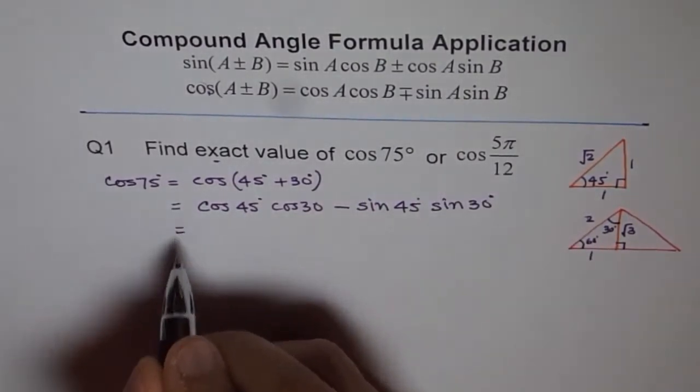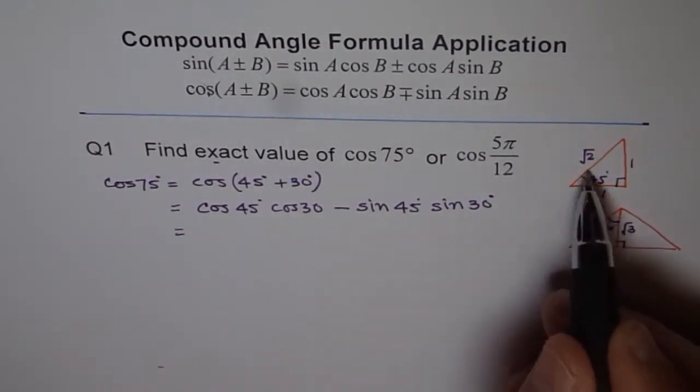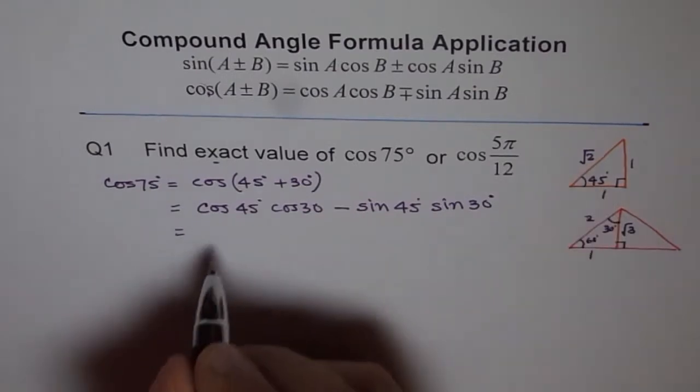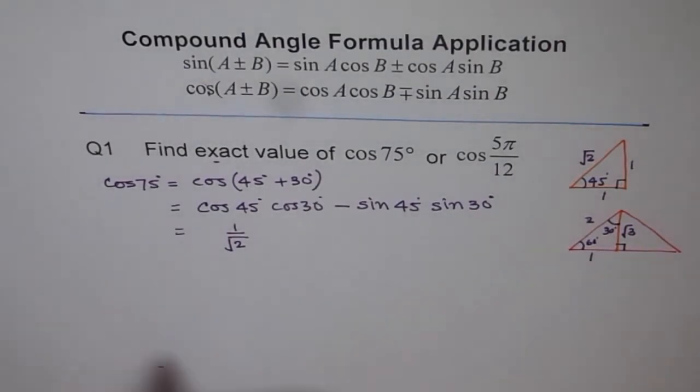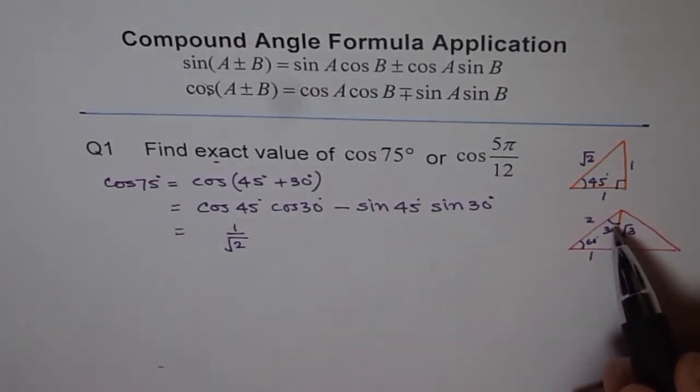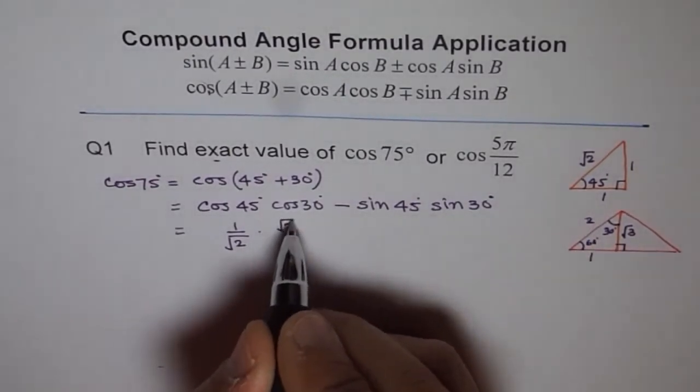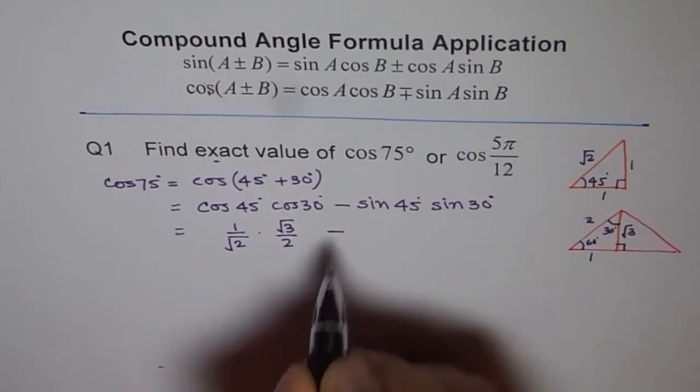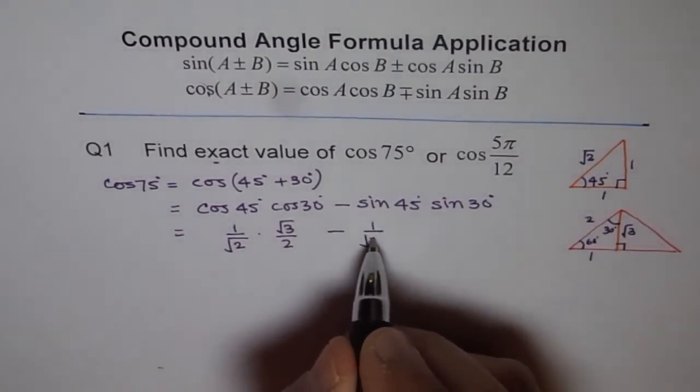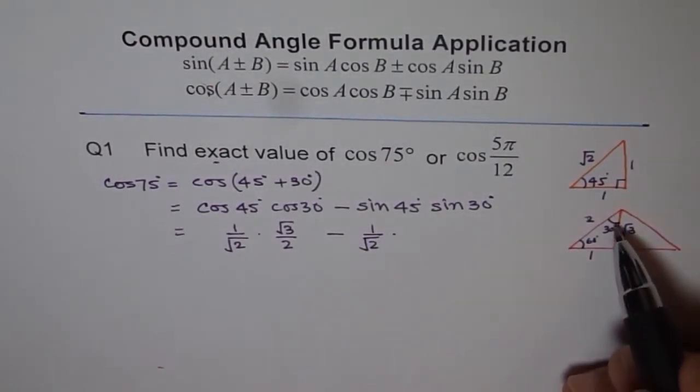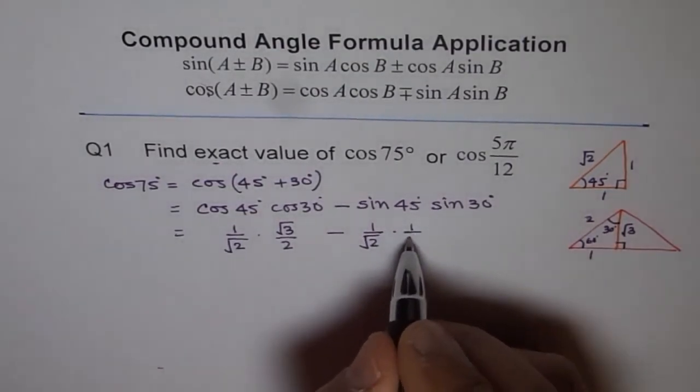Now, exact values means we use this triangle. Now, what is cos of 45°? Cos of 45° is adjacent over hypotenuse. It is 1 over √2. So, we write this as 1/√2. How about cos of 30 degrees? Cos of 30 degrees is adjacent side √3 over 2. So, we write it times √3/2 minus sin of 45°. Sin of 45° is 1/√2 times sin of 30°. Sin of 30° is 1/2, right? Opposite over hypotenuse. So, we get 1/2.